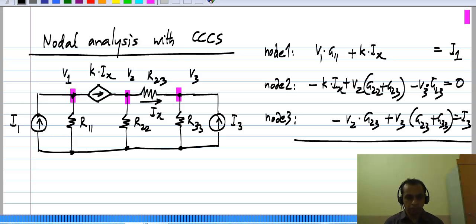We do have three equations, but we have this extra unknown here which is i_x, and the primary variables I would like to use in nodal analysis are the node voltages.